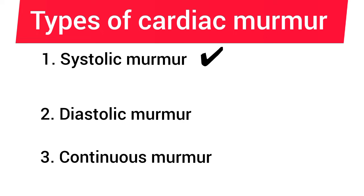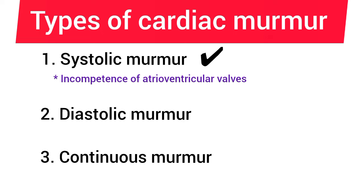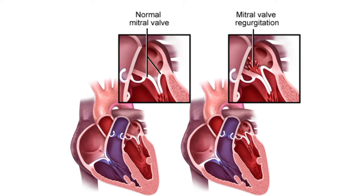The systolic murmur is a murmur produced during systole. It is produced in the following conditions. Number one is incompetence of atrioventricular valves. When the atrioventricular valves become weak, these valves cannot close completely. It causes regurgitation of blood from the ventricles to the atria during ventricular systole, producing the murmur. It is a harsh blowing sound with a high frequency.